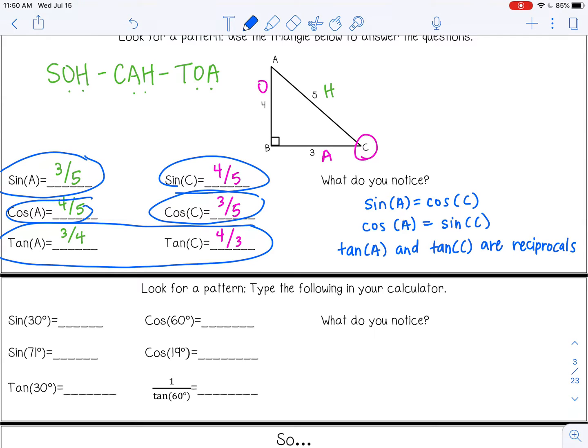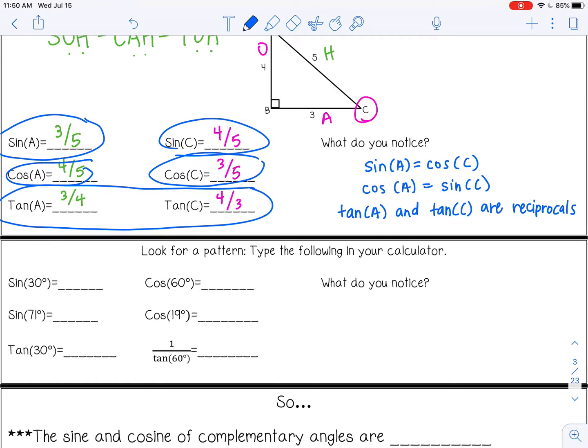All right, in the next section, it says, again, look for a pattern. Type the following in your calculator. So if you've never typed trig ratios in your calculator, go ahead and grab a calculator now. And on your calculator, look for the buttons that say sine, cosine, and tangent. So for the first one, I'm going to press the sine button. And then I'm just going to type in 30. You don't have to put degrees in the calculator. And then close your parentheses and hit enter. And you should have gotten one half. If you did not get that, check your mode for your calculator and make sure that you are in degrees and not radians.